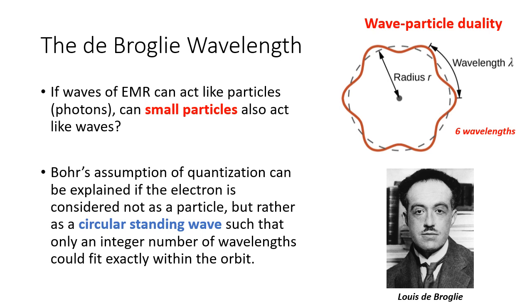Even though the Bohr model failed for multi-electron atoms, the concepts of quantum numbers and fixed energy levels were important steps forward in understanding quantum theory. Earlier, we learned that electromagnetic radiation doesn't only act as waves — it could also act as small particles known as photons.